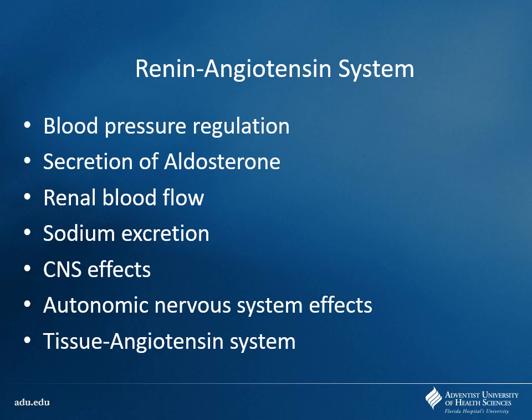The RAS increases blood pressure through several mechanisms: aldosterone causes more sodium reabsorption, which decreases potassium — that's why aldosterone antagonists cause hyperkalemia. Angiotensin II is a very potent vasoconstrictor. Angiotensin-converting enzyme also metabolizes bradykinin, which is normally vasodilatory, so inhibiting its breakdown adds to the vasoconstrictive effect.